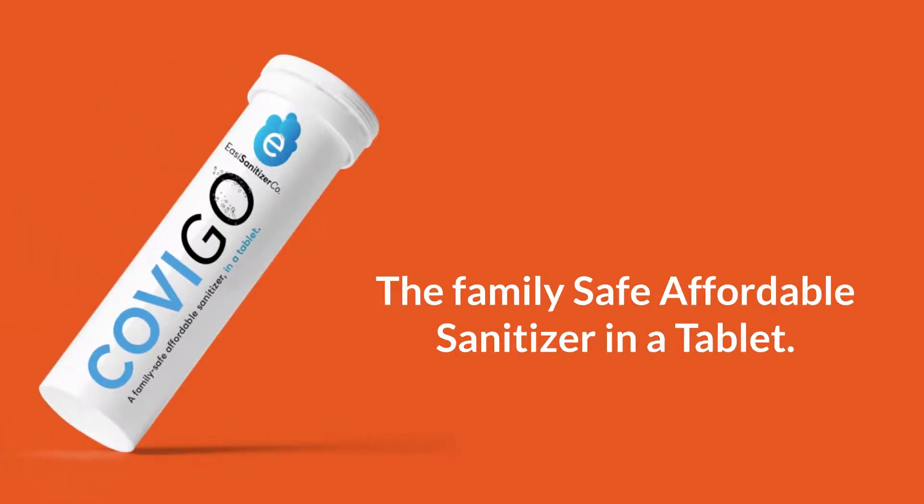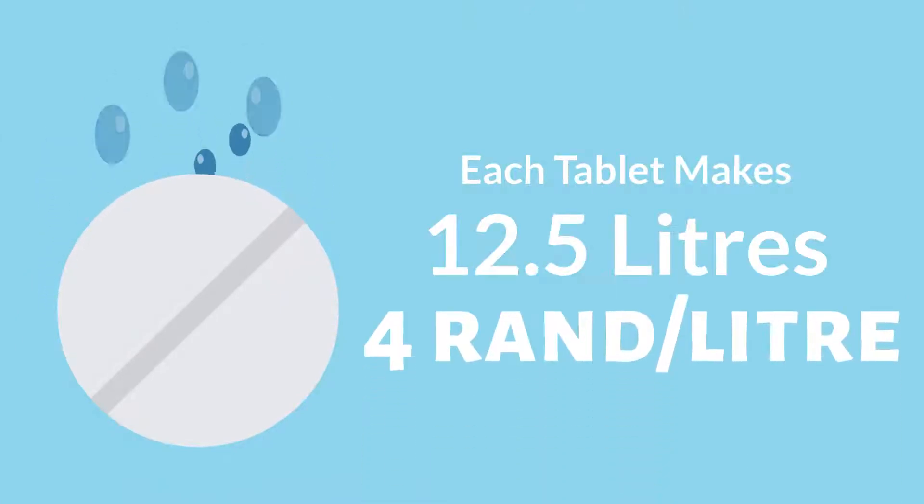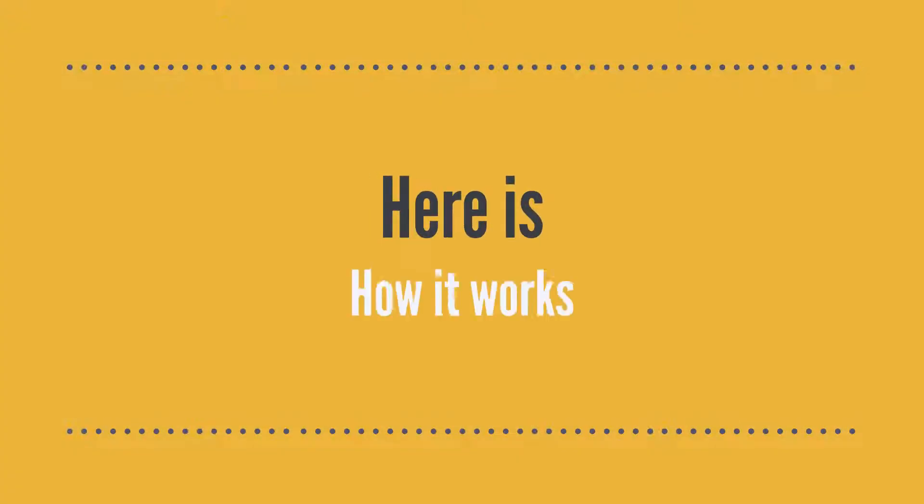Covigo – the family-safe, affordable sanitiser in a tablet. Each tablet makes 12.5 litres – that's 4 rands per litre. Here's how it works.